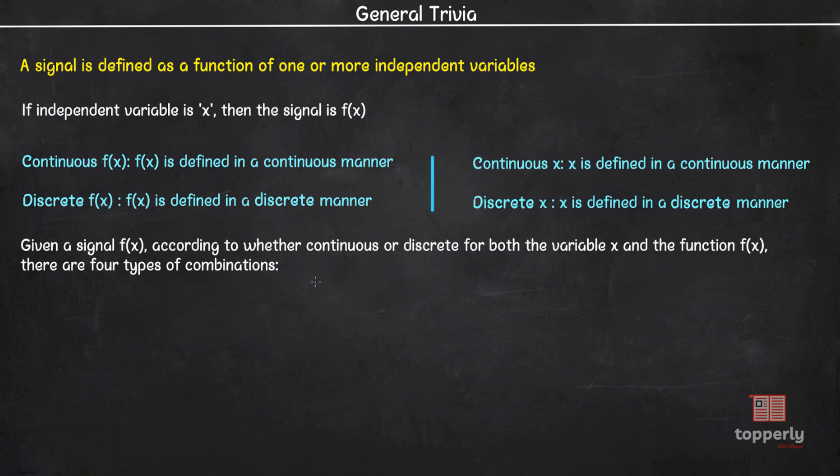Now according to whether a signal is continuous or discrete for both the variable x and the function f, the signal can be categorized into four. And as stated before, they are analog signals, continuous x signals, discrete x signals, and digital signals.